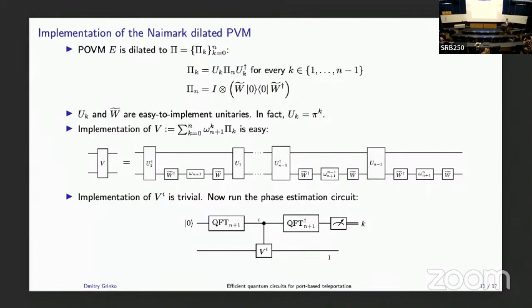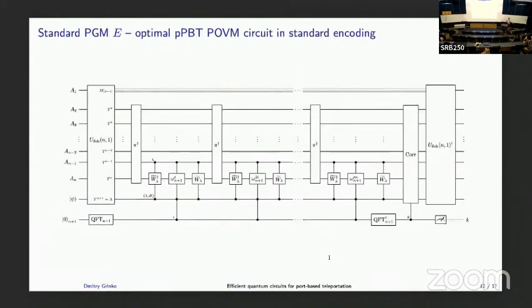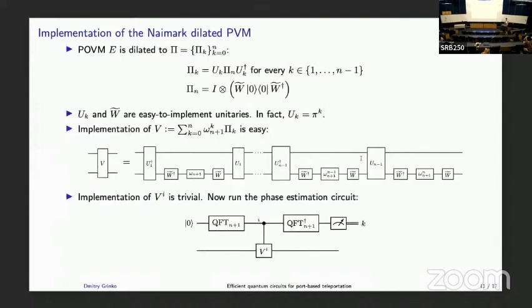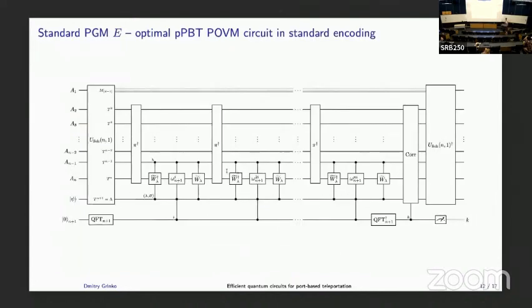The total resulting circuit for the standard PGM looks like this: on the left we start with n+1 qudits — a_1 through a_n are ports and psi is the state Alice wants to teleport. You apply the Schur transform described in our previous paper, then apply unitaries U_k and W in this picture adapted to this specific context, essentially a linear-in-n number of times. The circuit shown is in standard encoding.